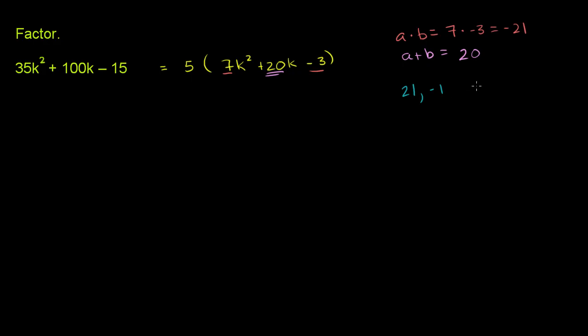And if you take their sum, 21 plus negative 1, that is equal to 20. So these two numbers fit the bill. Now, let's break up this 20k into a 21k and a negative 1k. So let's rewrite the whole thing.